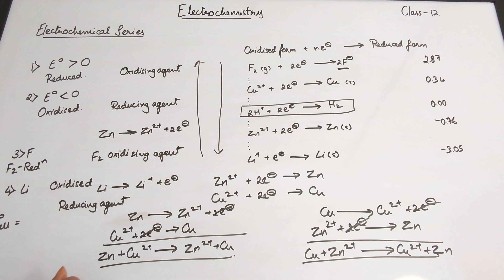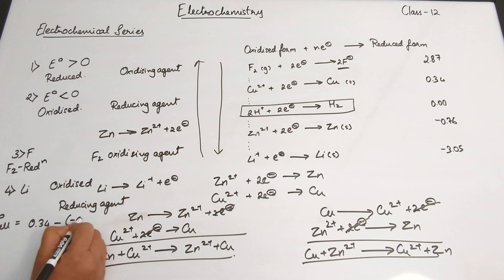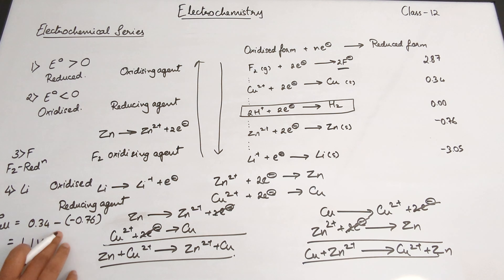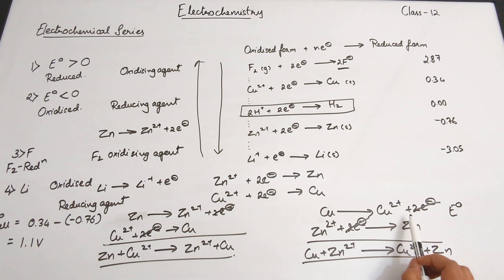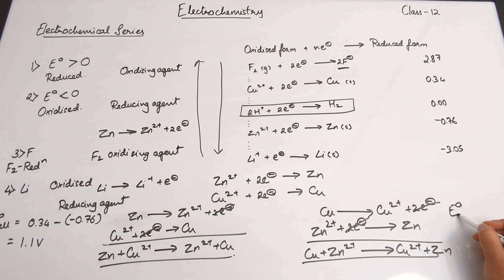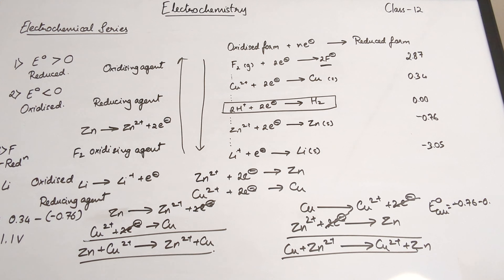Lithium in comparison to zinc will have a higher tendency to get oxidized. So as we go down the series, you have an increase in reducing power, and when you go from the bottom to the top, you have an increase in oxidizing power. All of this is useful for us to calculate the E⁰ cell of a cell.